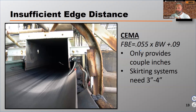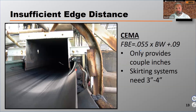SEMA has a formula in SEMA 7 that tells you how much free belt edge you need. That formula is: free belt edge = 0.055 × belt width + 0.09. The problem with that formula is it only provides usually a couple of inches of free belt edge, like you see in this photo.